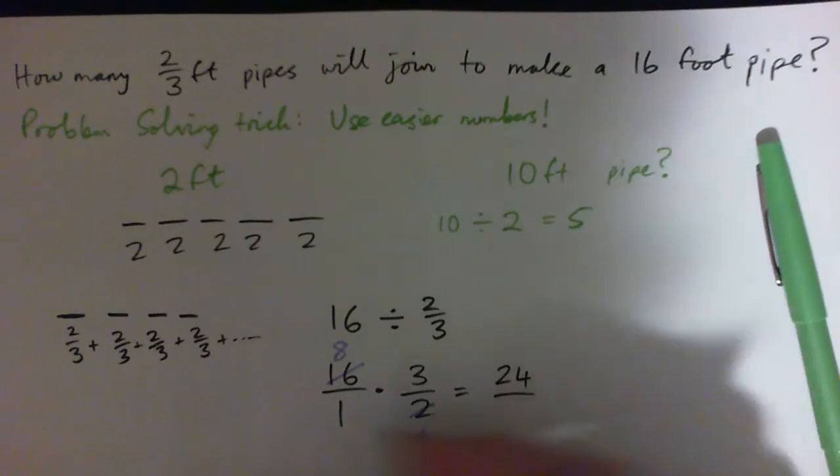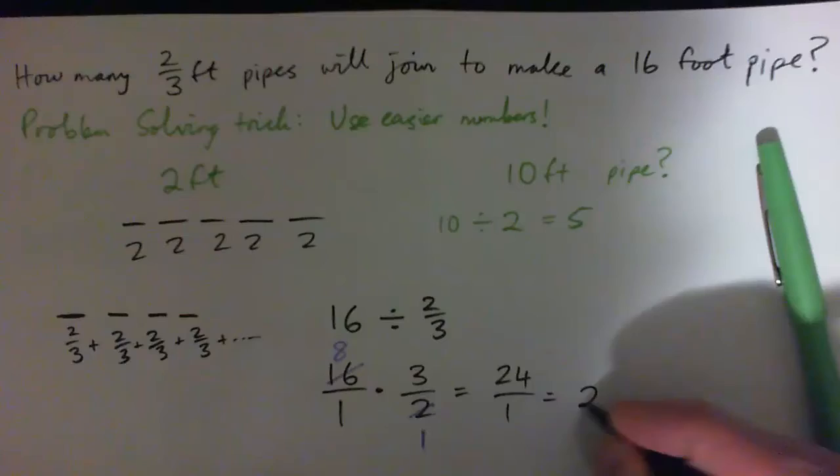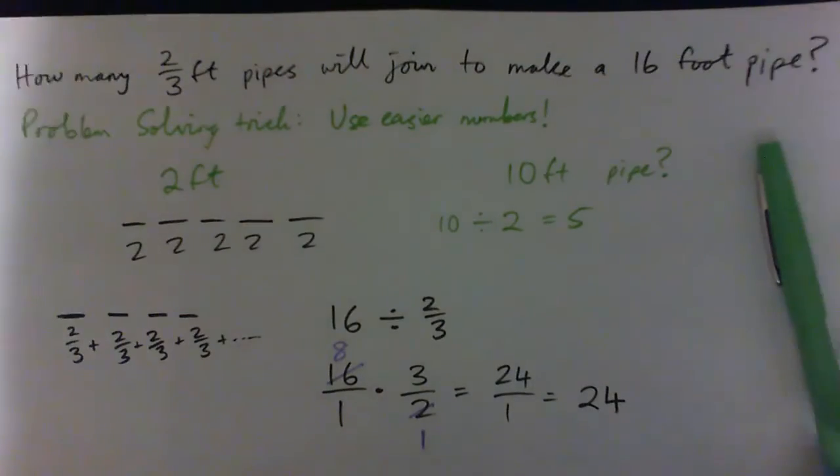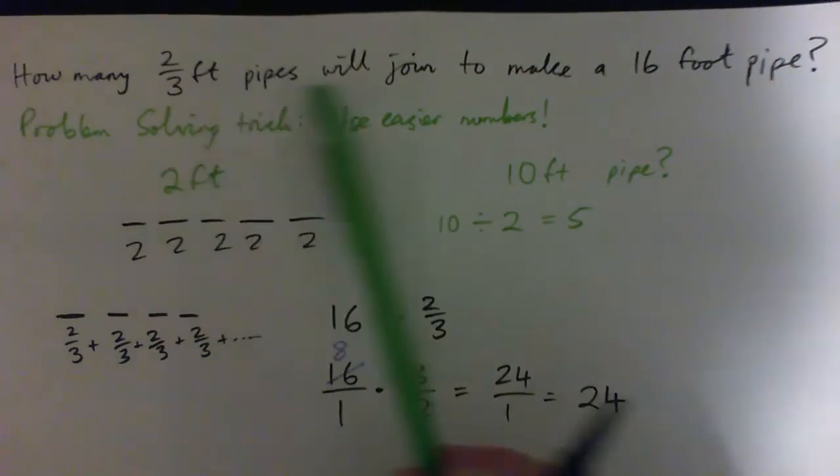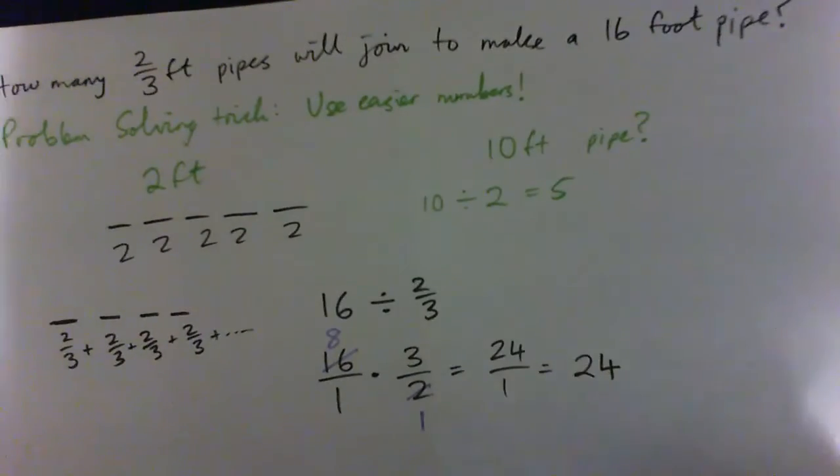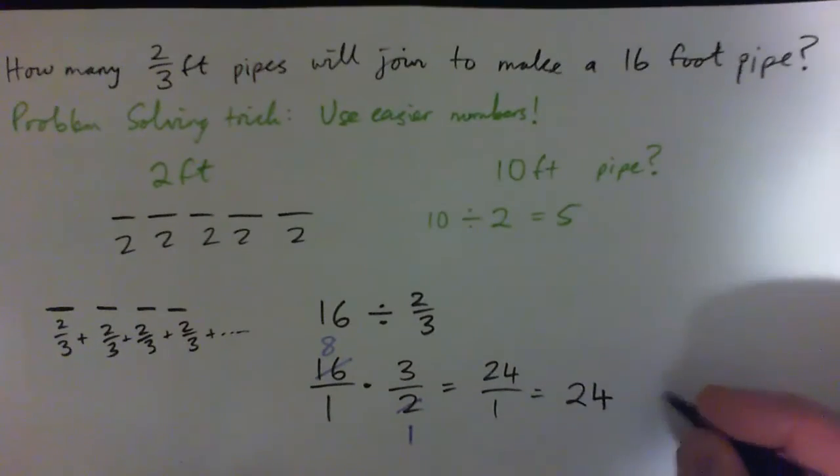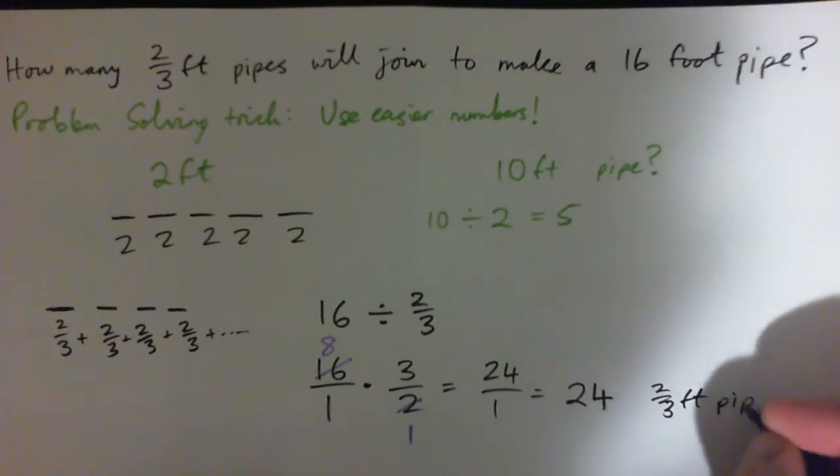So now on the top, 8 times 3 is 24, 1 times 1 is 1, so 24 over 1. So how many two-thirds foot pipes will join together to make a 16-foot pipe? The answer is 24. Twenty-four two-thirds foot pipes will be needed.